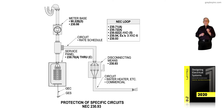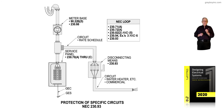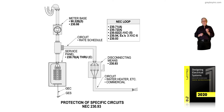Also, 230.94 exceptions 3 and 6 are being applied. We're complying with 230.93, tapping ahead of the main in accordance with 230.82. We are grouping the disconnecting means, switched together in accordance with 230.71 and 230.72A, which basically says you can have 2 to 6 mains grouped, as you see in the illustration.